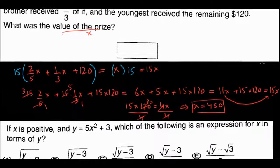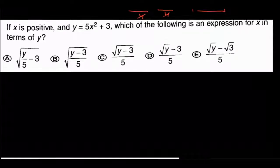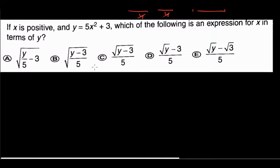That involved a lot of arithmetic but the setup was straightforward. Next example: a typical GRE question with two variables. Given y equals 5 times the square root of x plus 3, with x positive, which expression gives x in terms of y? We want x isolated. Move the plus 3 to the other side: y minus 3 equals 5 times square root of x. Then divide both sides by 5.